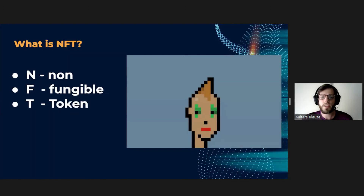So, NFTs — what does it stand for? Non-fungible means that it is unique and can't be replaced with another NFT. Fungible item means that it can be exchanged because their value defines them and not their unique properties. For example, Ethereum or dollars are fungible because one USD is tradable for another USD — they have the same value.